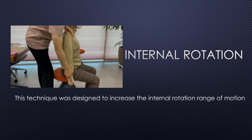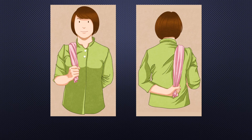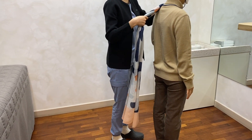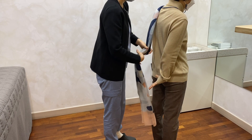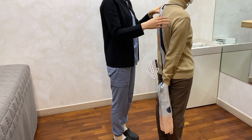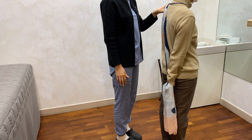Internal rotation. This technique was designed to increase the internal rotation range of motion. Prepare a towel and hang it over the non-painful shoulder. The painful side arm is to roll around and the non-painful arm is to pull it down. Pull the towel down with the non-painful hand until the painful shoulder bears the motion. Then apply a counterforce against the towel to contract the muscle. Stay on hold there for 20 seconds and then relax.